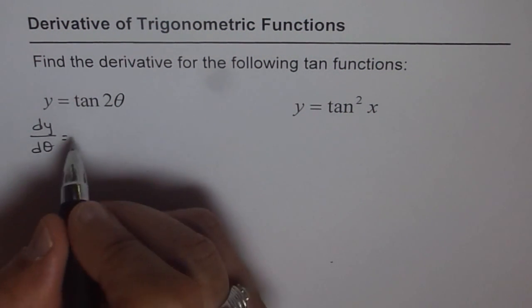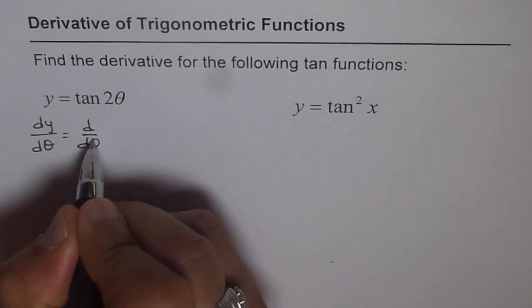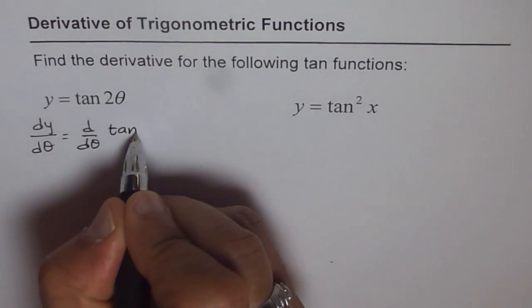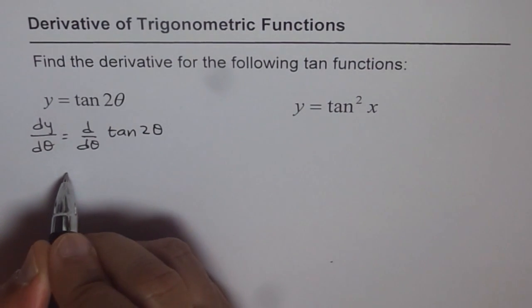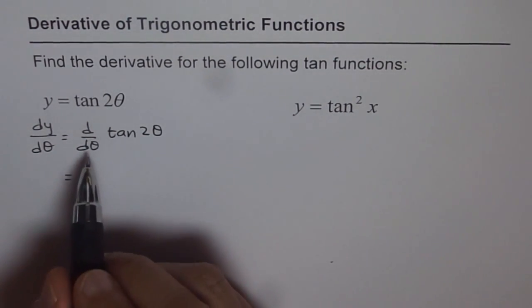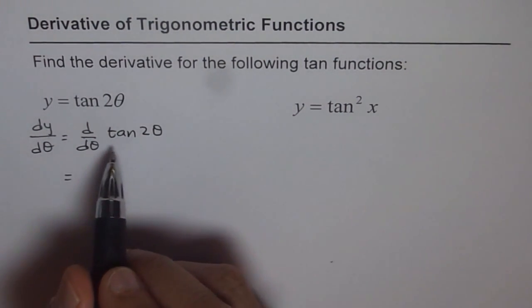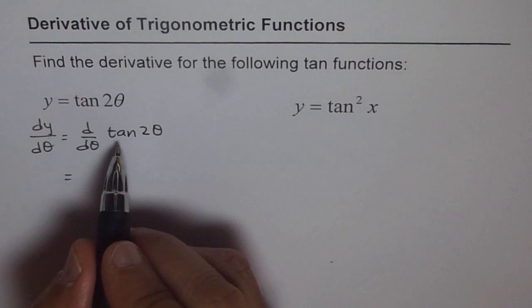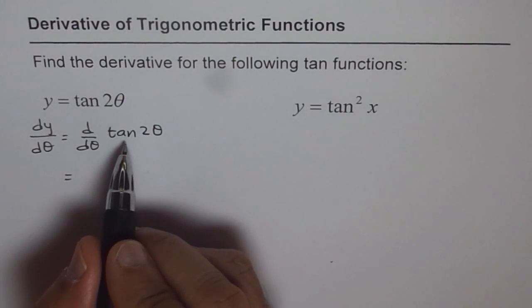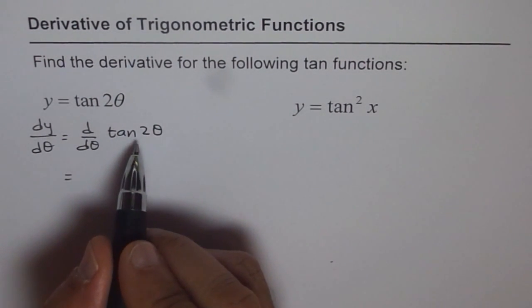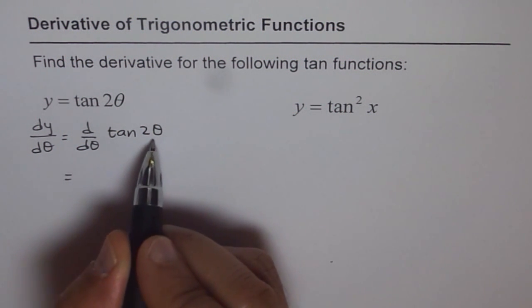So dy/dθ is d/dθ of tan 2θ. The derivative of tan 2θ should be what? The derivative of tan x is sec² x. Now, that x is actually 2θ.